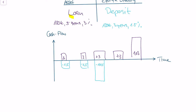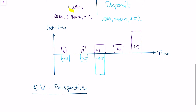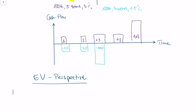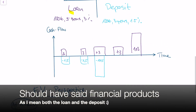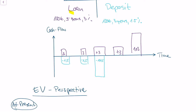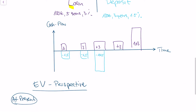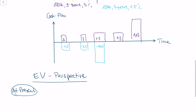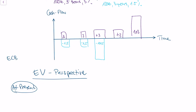The first perspective is the so-called expected value perspective, or EV perspective. The expected value perspective is concerned with the value of the balance sheet in year zero, or at present. To calculate the value of both assets, we simply use the formula for valuation of bonds. I will make a separate video on why this formula actually makes sense.